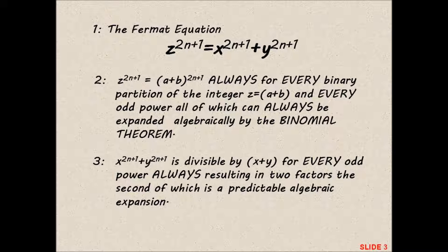2. Z to the power 2n plus 1 is equal to a plus b all to the power 2n plus 1, always for every binary partition of the integer z equals a plus b, and every odd power all of which can always be expanded algebraically by the binomial theorem.